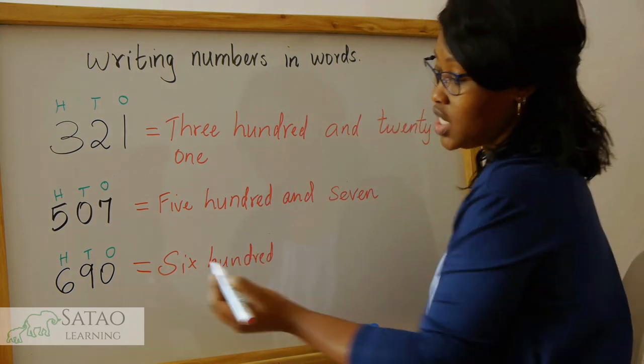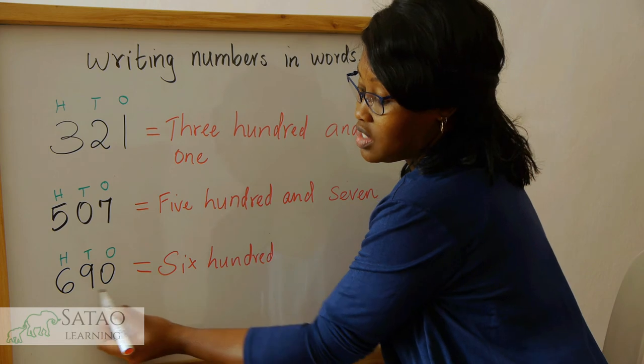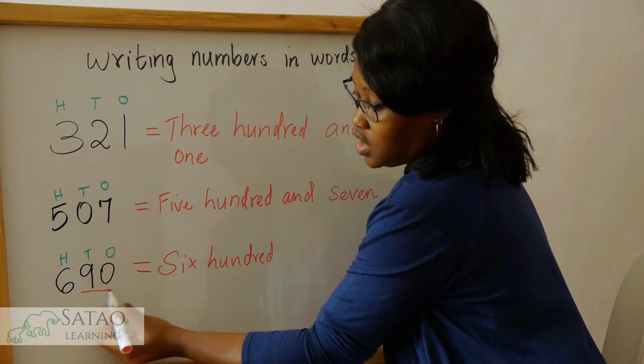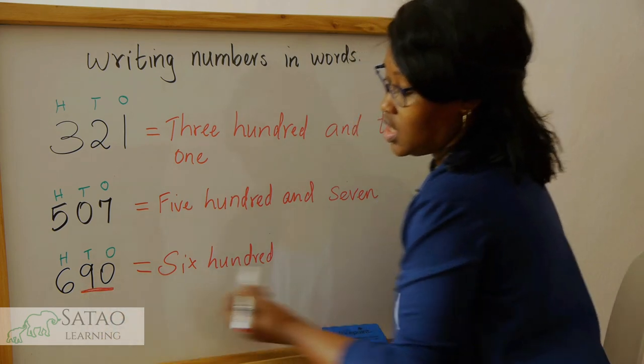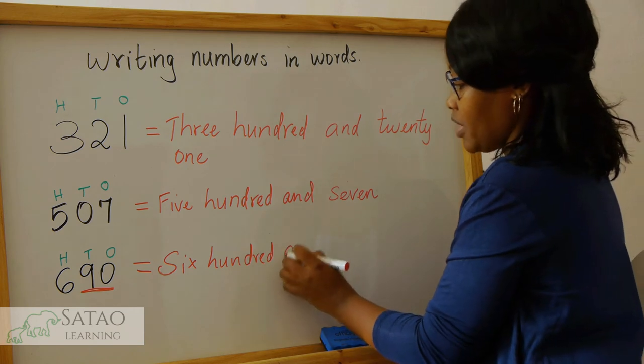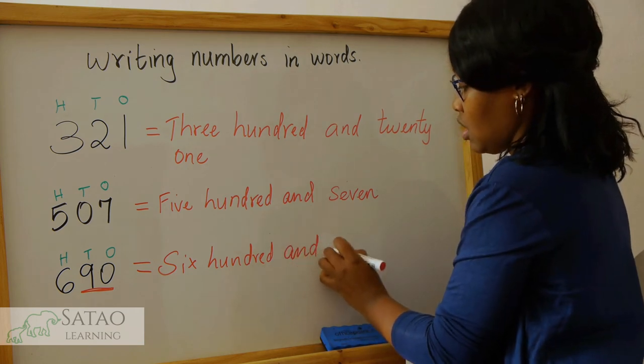Then we now read the last two digits, which is that. So how do we read that number? That number is called 90.